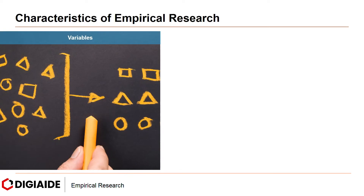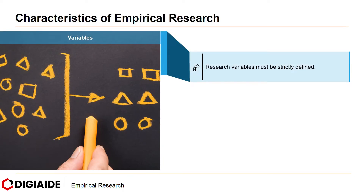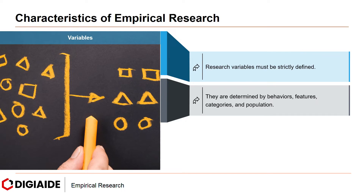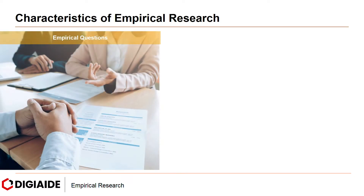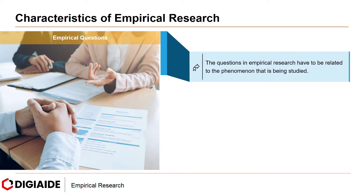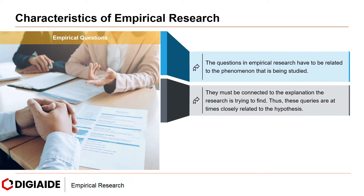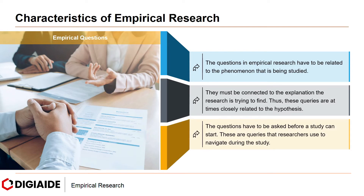Next, variables — research variables must be strictly defined. They are determined by behaviors, features, categories, and population. The gathered information has to be defined according to the nature of the research and must be delimited. Next, empirical questions — the questions in empirical research have to be related to the phenomenon that is being studied. They must be connected to the explanation the research is trying to find out. Thus, these queries are at times closely related to the hypothesis. The questions have to be asked before a study can start, as these are queries that researchers use to navigate during the study.